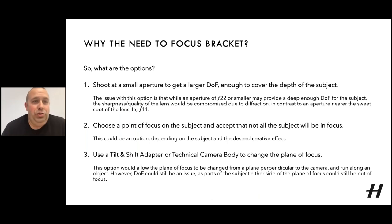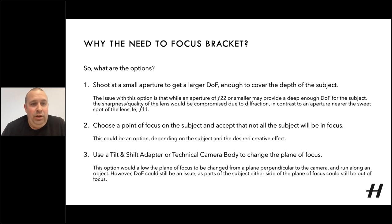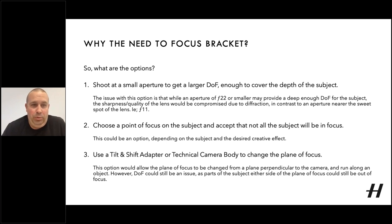What are the options to correct this? Number one: we can shoot at a small aperture to get a larger depth of field wide enough to cover the depth of the subject. But the issue is that while an aperture of F22 or smaller may provide a deep enough depth of field, the sharpness quality of the lens would be compromised due to diffraction, in contrast to an aperture near the sweet spot of F11. Alternatively, we can choose a point of focus on the subject and accept that not all of the subject will be in focus — this could be for creative effect.